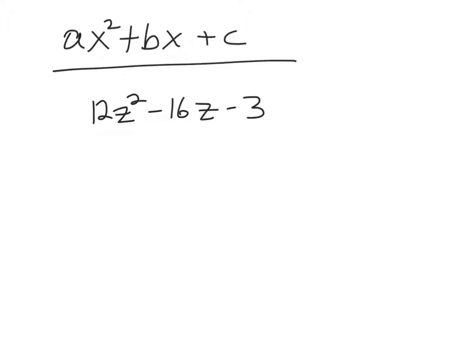So again, this trinomial, 12z squared minus 16z minus 3, does fit the form up here. Here I've got something times x squared, while here I've got 12 times z squared. Up here I've got something times x, while here I've got minus 16 times z. And up here I've got a constant plus c, and down here I've got minus 3. So it fits the form.